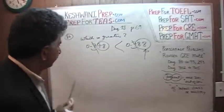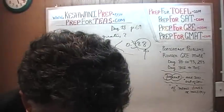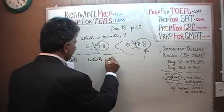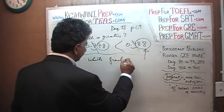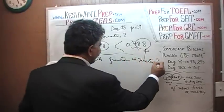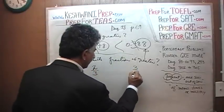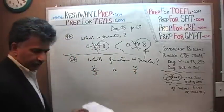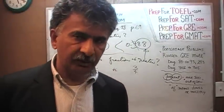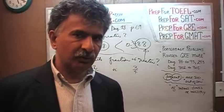Next one. We have 2/3 versus 3/4 — which fraction is greater? The quickest, simplest, most efficient way of comparing two fractions is to make their denominators — their bottom parts — the same as quickly as possible.